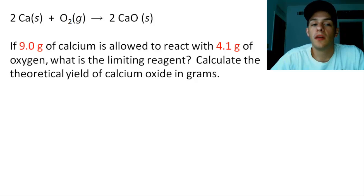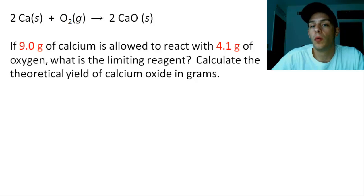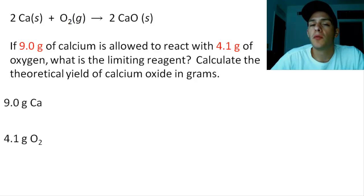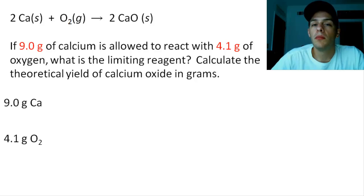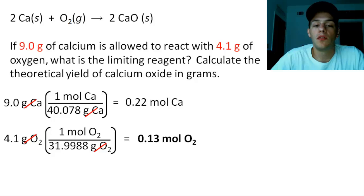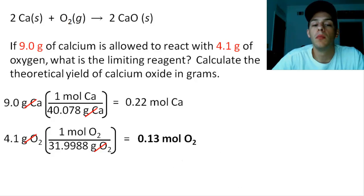The chemical equation tells us that two moles of calcium reacts with one mole of oxygen to form two moles of calcium oxide — it doesn't say anything about mass. So what we need to do is convert the masses of calcium and oxygen into moles using the molar masses from the periodic table. In doing so, we get 0.22 moles of calcium and 0.13 moles of oxygen.